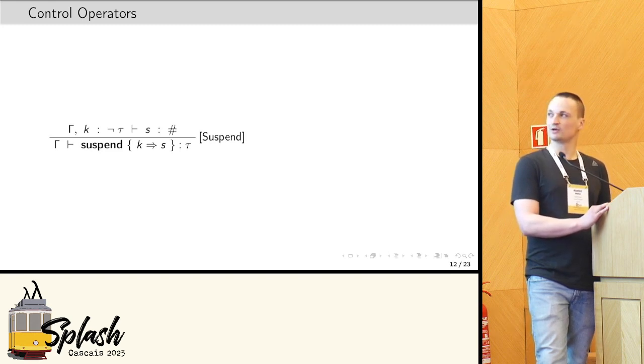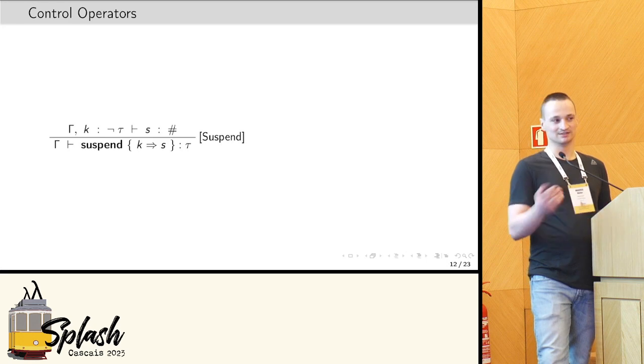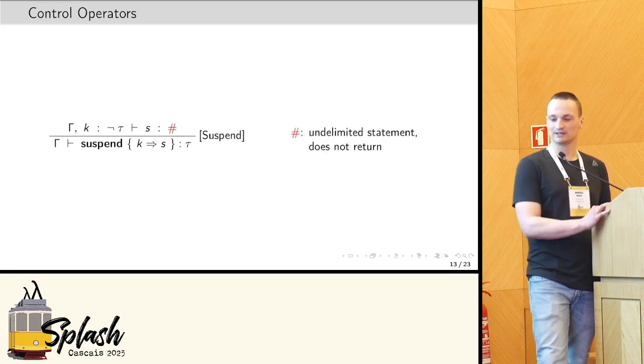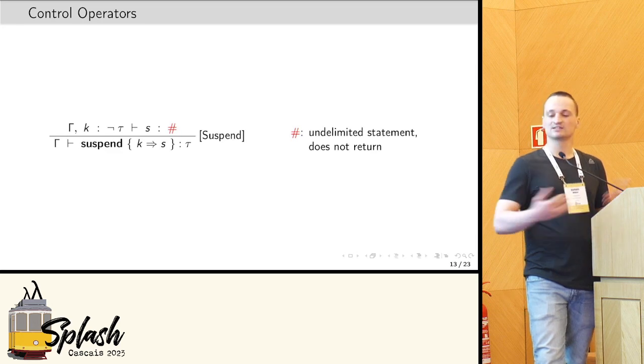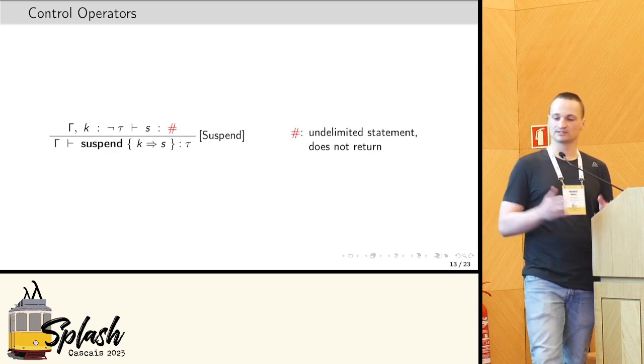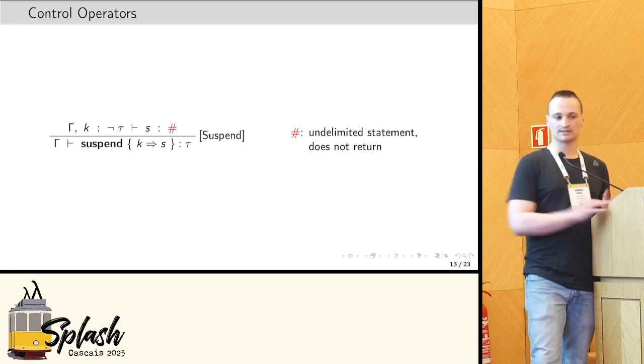So, as you can see in the premise, it has a special typing judgment, so this hash here actually means that the statement s is undelimited, that is, it does not return. So the suspend sort of shifts into this undelimited world.